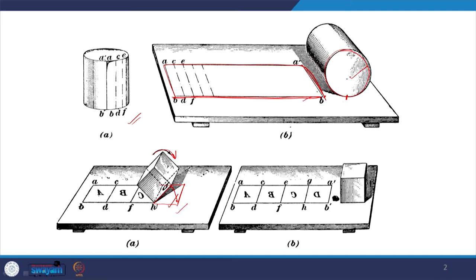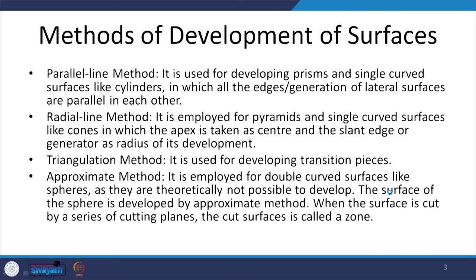For any solid, any prismatic solid, its surface can be produced like this. There are multiple methods of development of surfaces which can be followed. One is what I have just shown you, which is the parallel line method. It is primarily used for developing prisms where we are going to get straight lines.